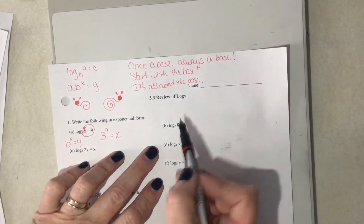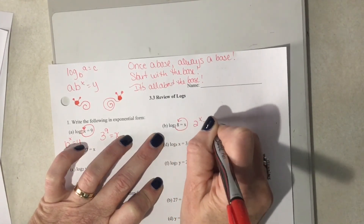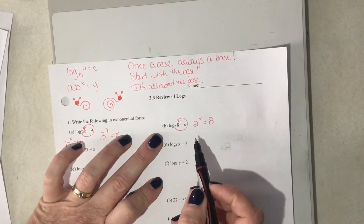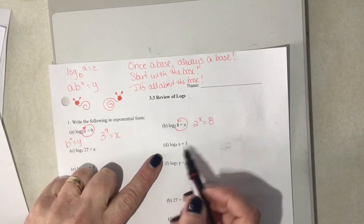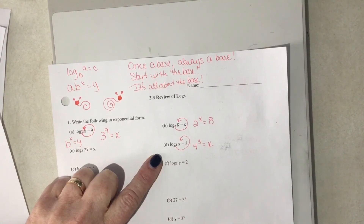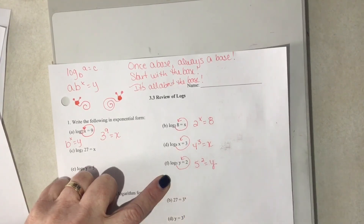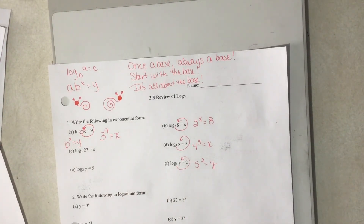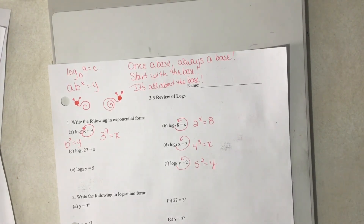For example b: my base is 2, I snail around — 2 to the x is equal to 8. We're not going to solve it right now, just getting back into the groove of writing it in exponential form. Skipping down to d: 4 to the 3rd power is x. And e: 5 squared equals y. As corny as the snail method may seem, it helps give you the order in which to write the exponential form — that is basic to logarithmic functions.